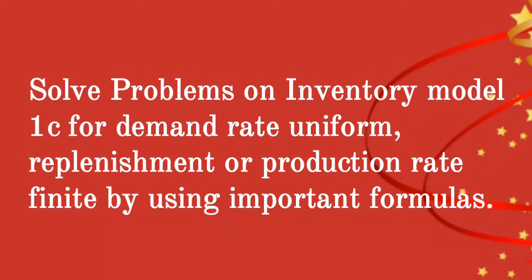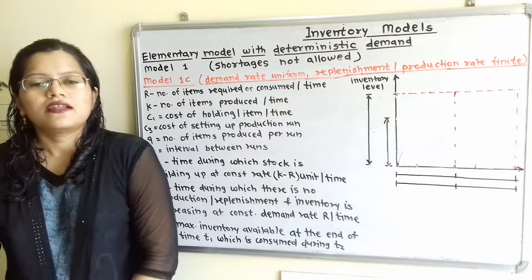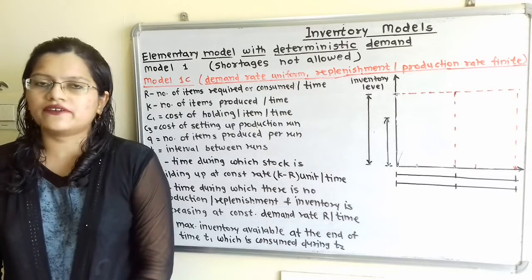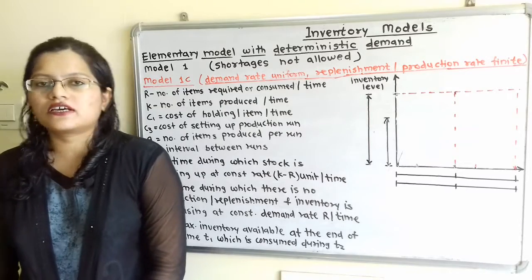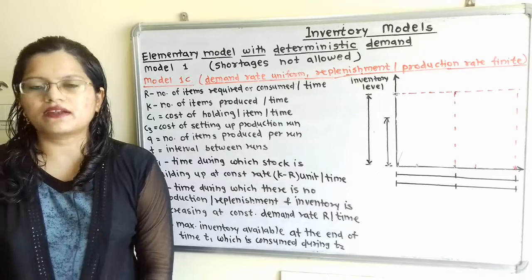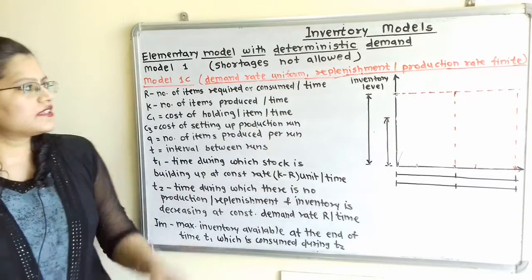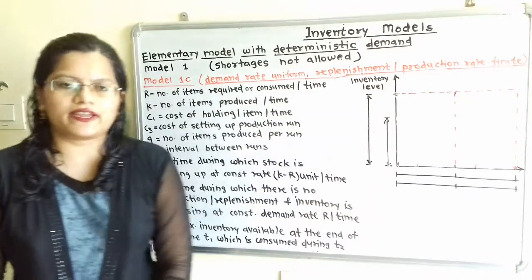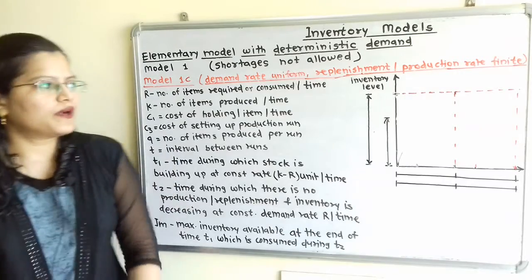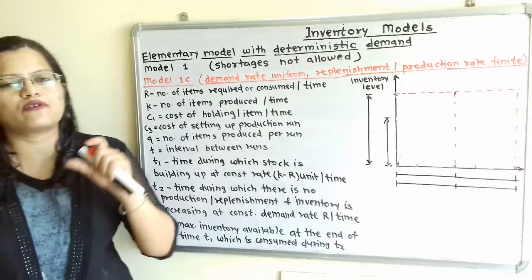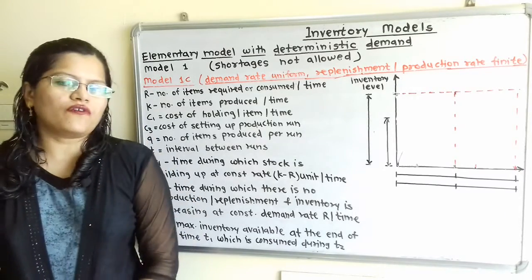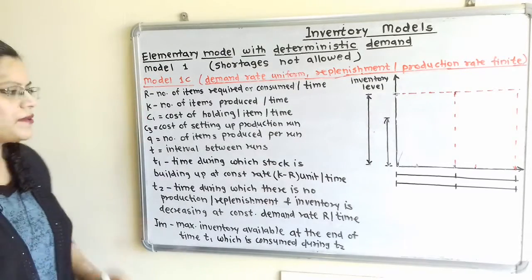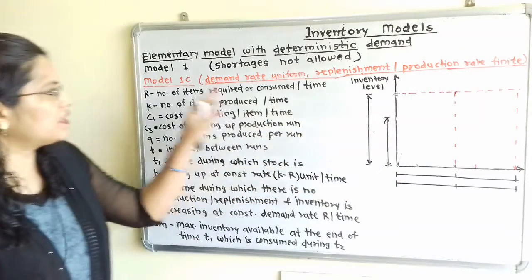We will solve problems on Inventory Model 1C, where Demand Rate is Uniform and Replenishment or Production Rate is Finite, using important formulas. Inventory Model 1 is under the category of elementary models with deterministic demand and shortages not allowed. Type 1C means Demand Rate is Uniform and Replenishment or Production Rate is Finite. In previous cases, replenishment was instantaneous, but here replenishment rate is finite, meaning we must show a slope for the replenishment process. We will understand the parameters and draw the diagram for Inventory Model 1C.